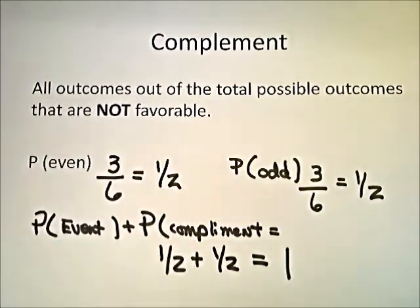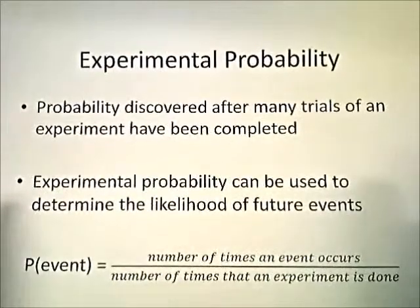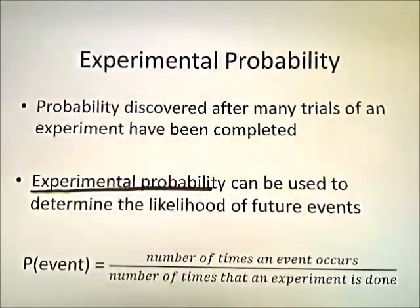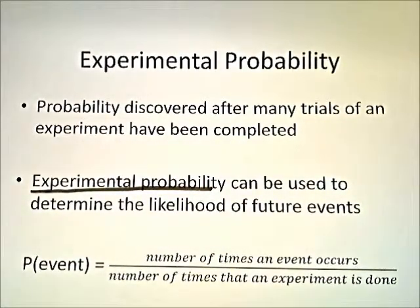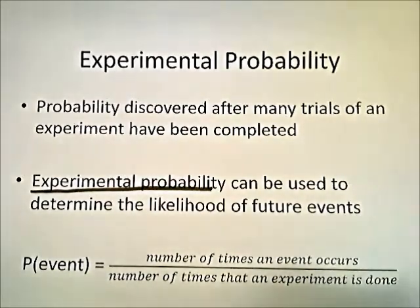Our next term to look at mathematically will be experimental probability — probability discovered after many trials once an experiment has been completed. Experimental probability can be used to determine the likelihood of future events. Mathematically, P(event) equals the number of times an event occurs in the numerator divided by the number of times the experiment is done as the denominator.